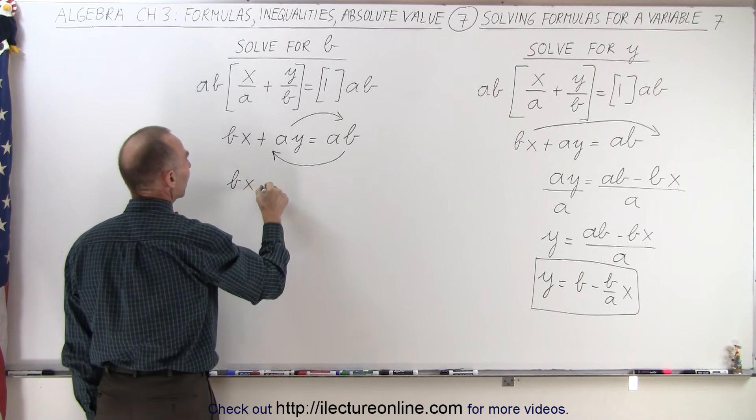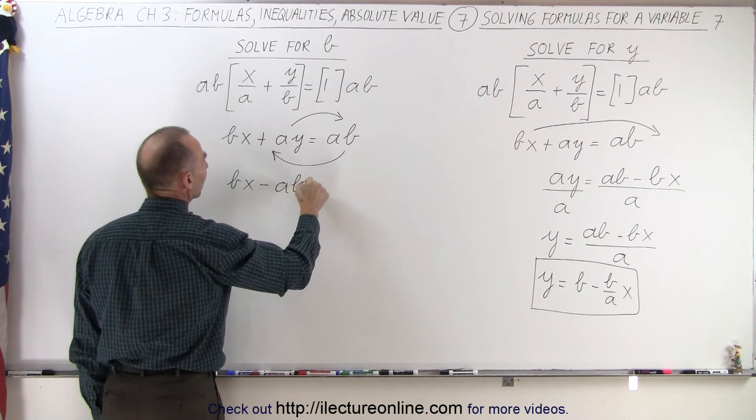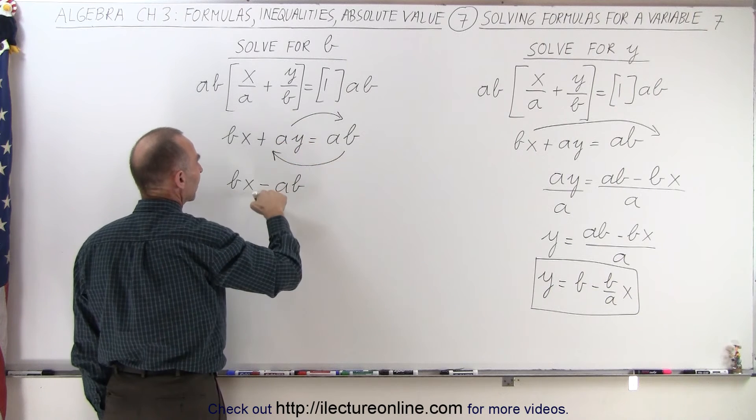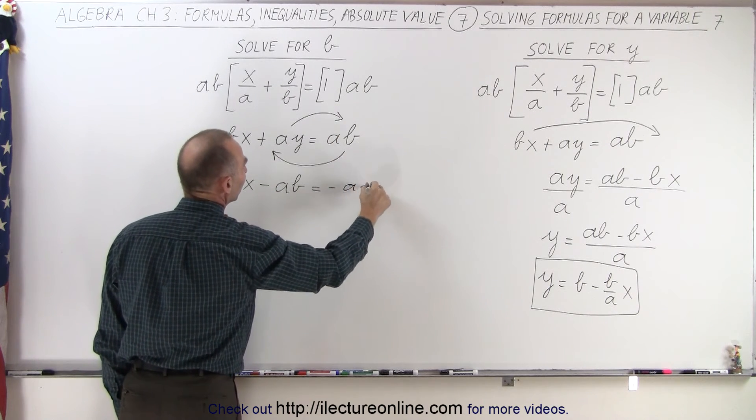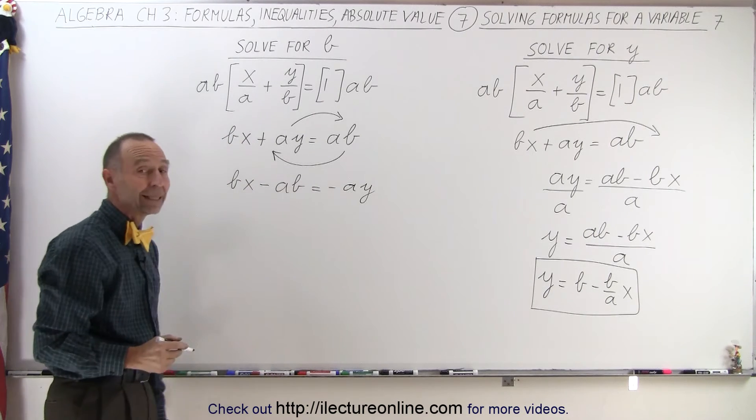So this becomes b times x minus ab, because I move the ab across the equal sign, it becomes a negative, equals, and that also becomes a negative, because I also cross the equal sign with the a times y.